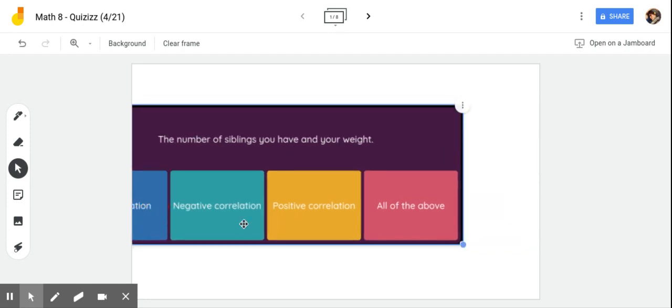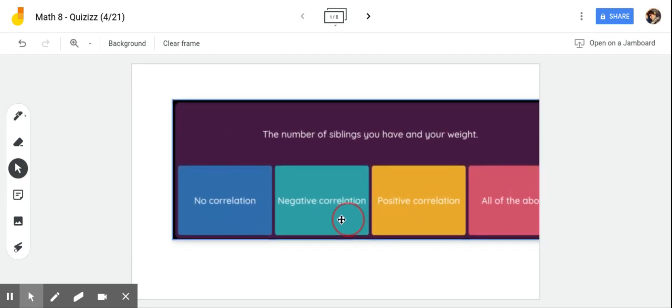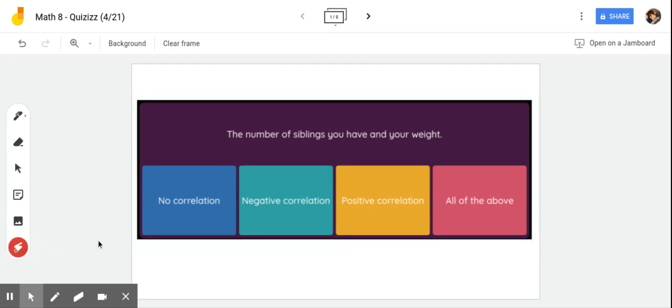When you're looking at a trend line or scatter plot, the number of siblings you have and your weight, what's the association or relationship going to be between those? A correlation is a fancy word, a 50 cent word for relationship or association. So what's the relationship between the number of siblings, brothers and sisters you have and how much you weigh? Unless you have so many brothers and sisters that you can't get anything to eat, that there's not enough food, there probably isn't much of an association there. So think about that as you choose your answer.